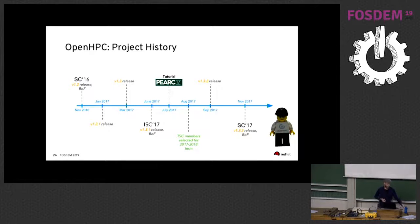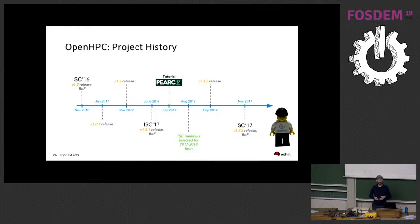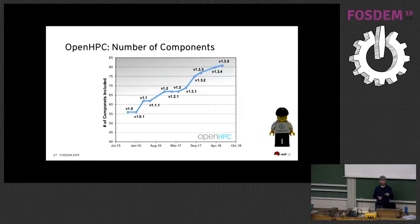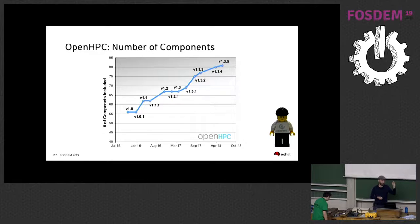Some project history: the first discussion about an HPC community project happened in June 2015 at International Supercomputing, and the first release was at Supercomputing 2015 in November. Since then we do continuous releases, roughly every quarter — we update the software and do a new release. The latest release, from November, is 1.3.6, and we are currently working on 1.3.7. Here are a few diagrams about usage: this shows the number of components over time. It's not a huge number but it's slowly growing as we add new things that people are asking for or submitting.